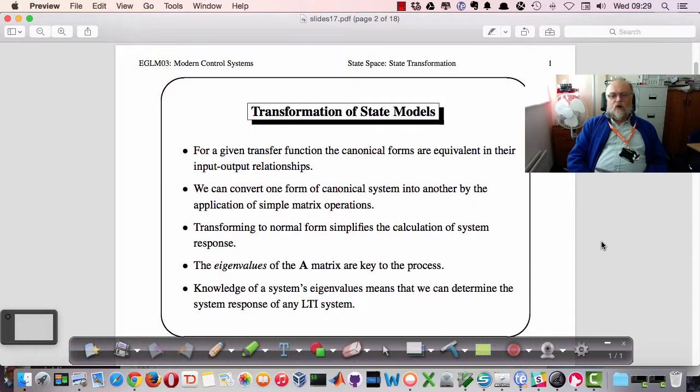If we try and convert into a normal form transfer function, that's the one where you have the eigenvalues effectively on the diagonal of the A matrix, then the actual input-output relationship can easily be calculated and we can get the time responses very easily, just with a minimum of effort.